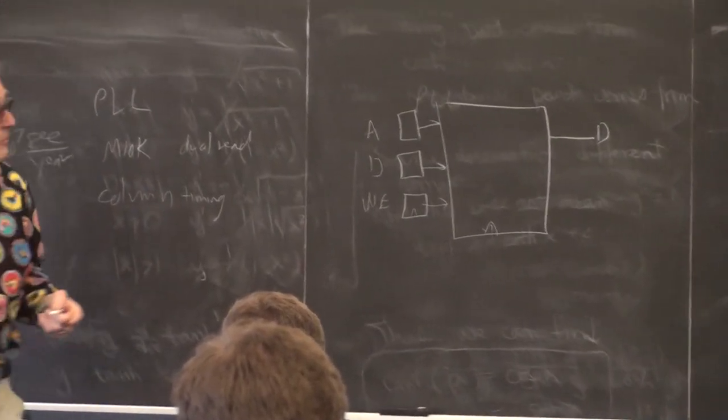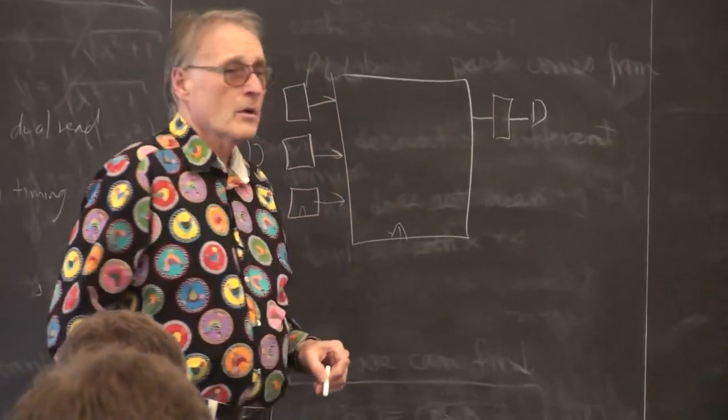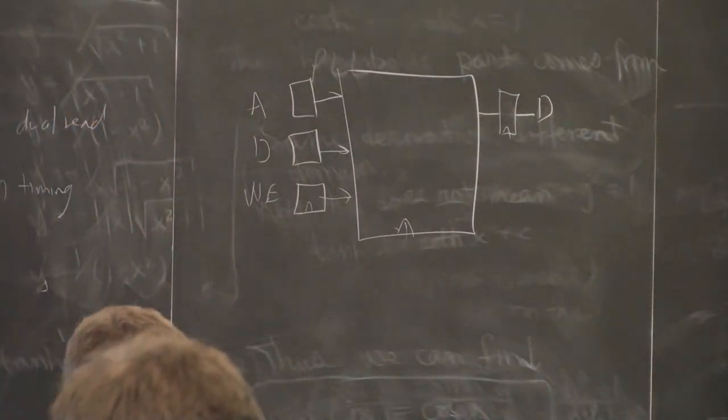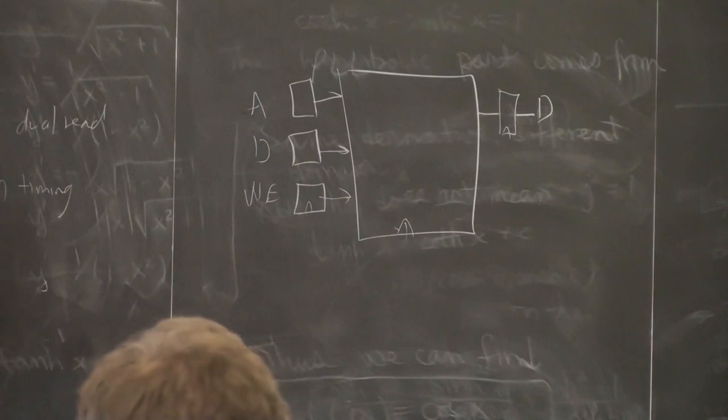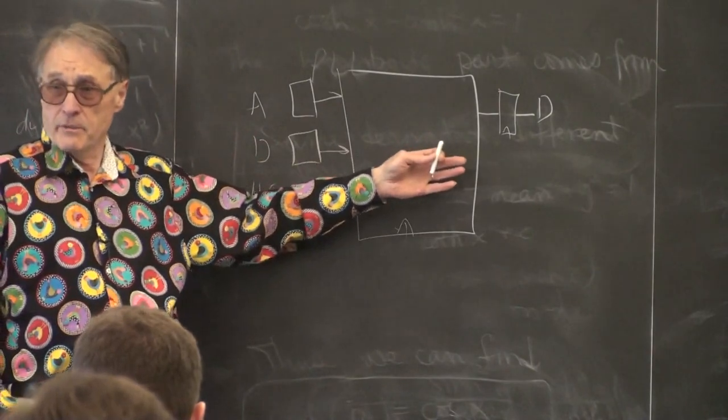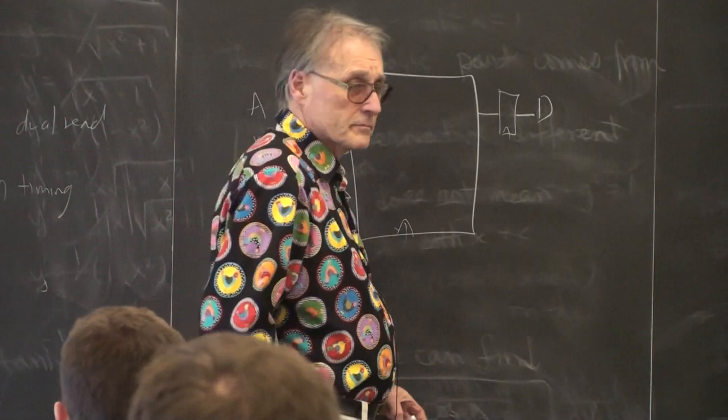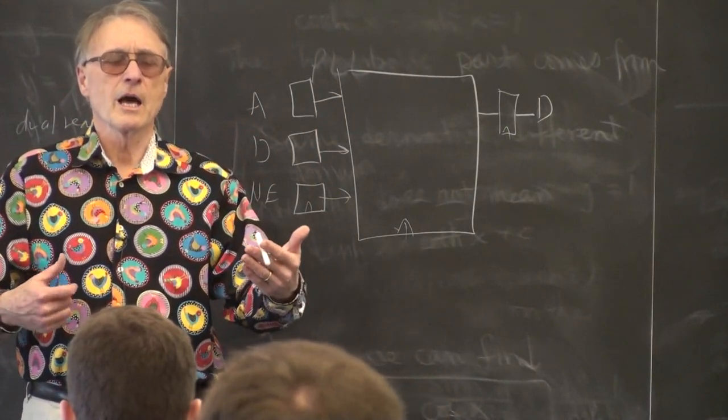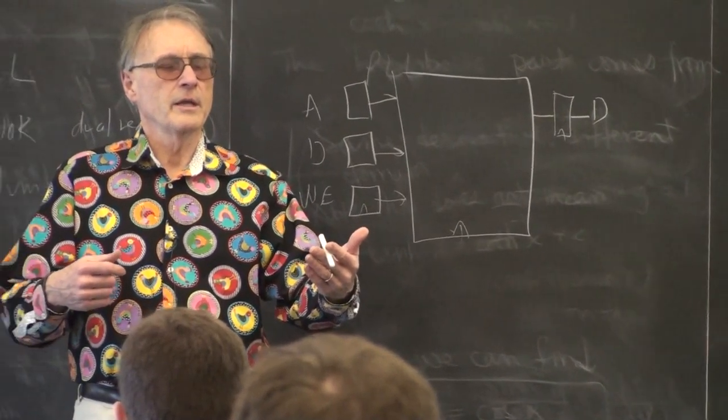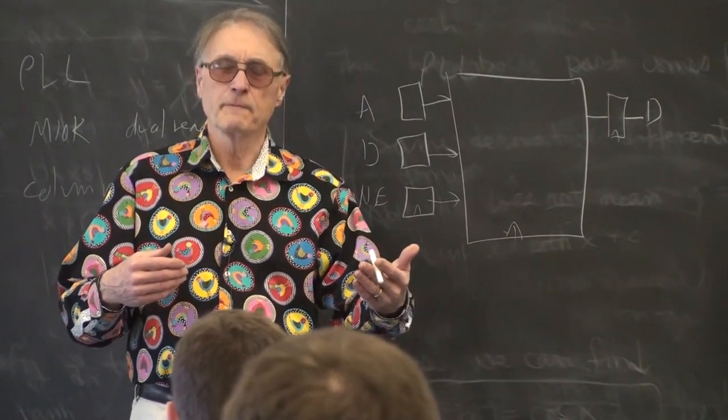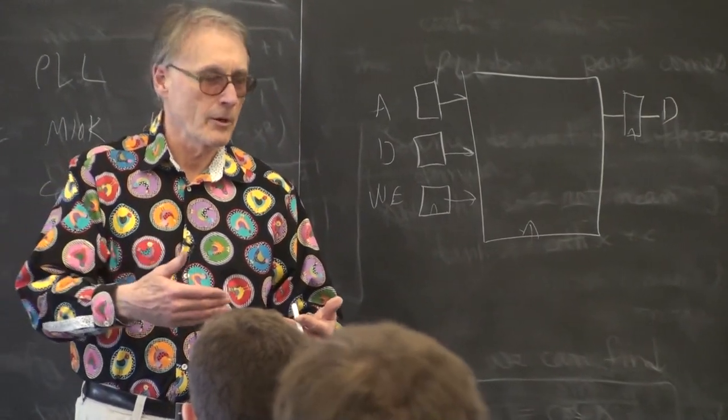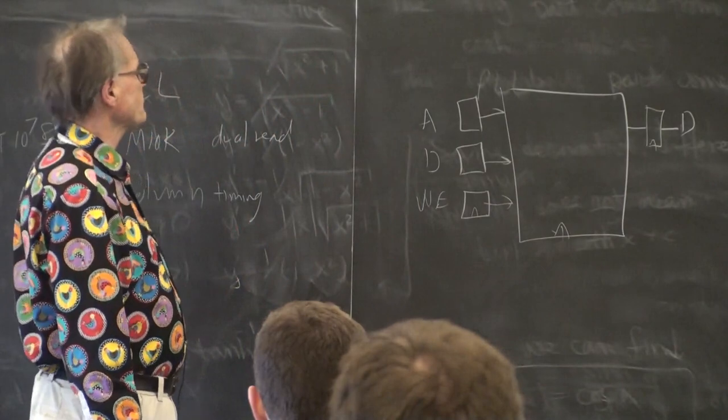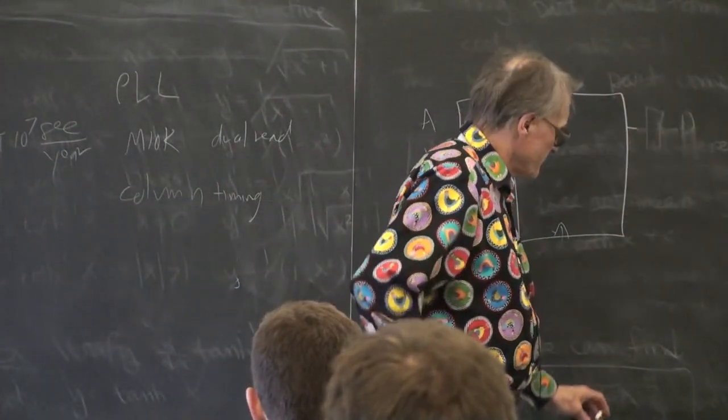There is an optional pipeline register on the data output. If you optionally include that, it's three cycles. You can implement a one-cycle write, a one-cycle read, by fully pipelining this, by running the pipeline at full speed. I've done it with interleaving, with a 50 megahertz clock, half the cycles can go to updating the VGA monitor, which only requires 25 megahertz data. And the other half of the cycles you can use for random access to the same memory.